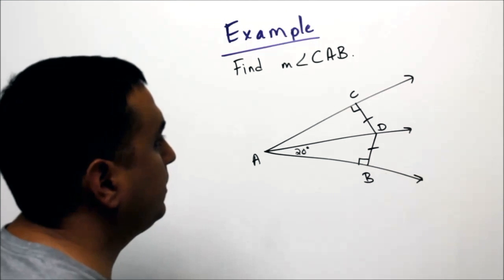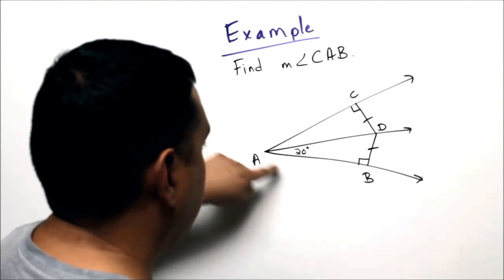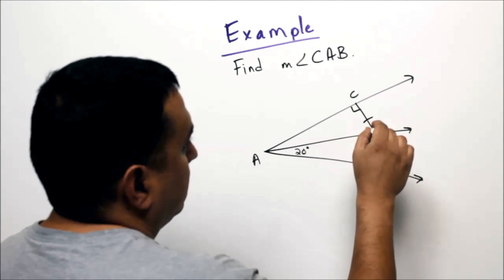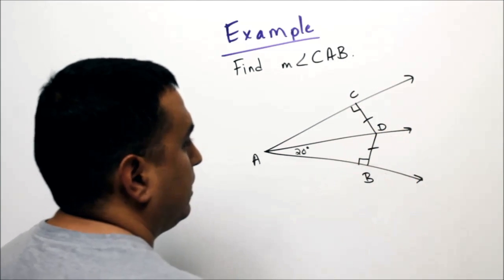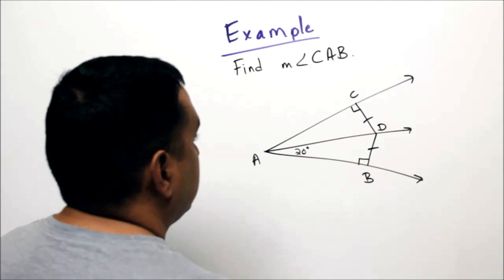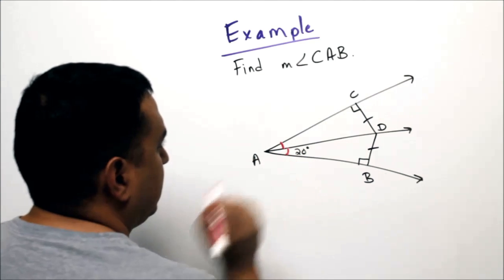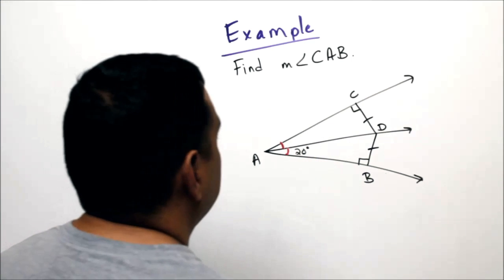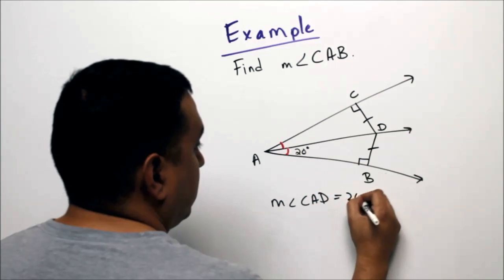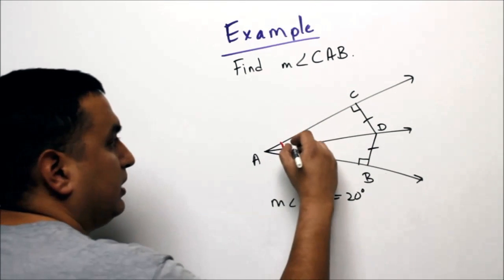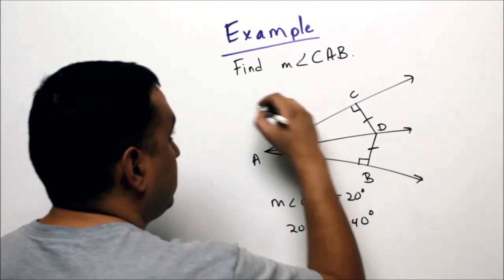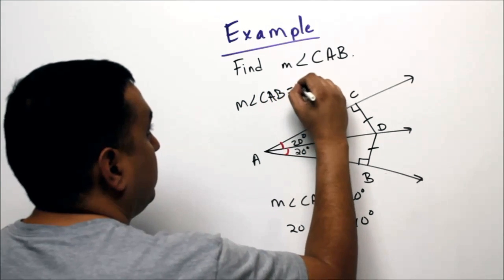Looking at this example, we need to find the measure of angle CAB. Looking at the diagram, I notice that D is equidistant from C and B, so by the angle bisector theorem, angle CAD is congruent to angle BAD. If this angle here is 20 degrees, then the measure of angle CAD is also 20 degrees. Since angle CAB is made up of both, 20 + 20 = 40 degrees.